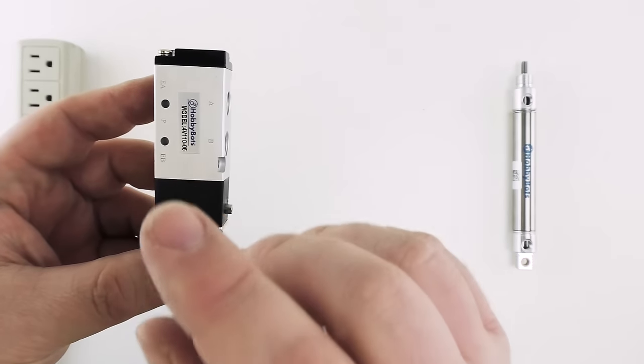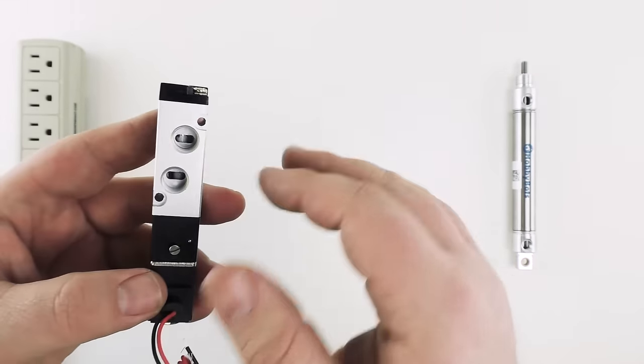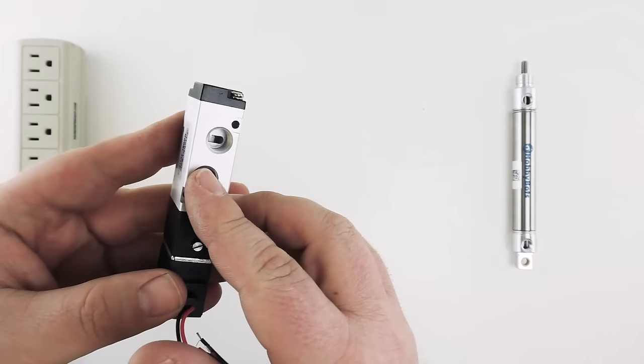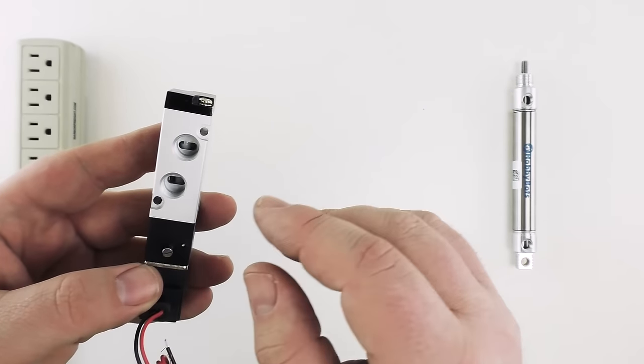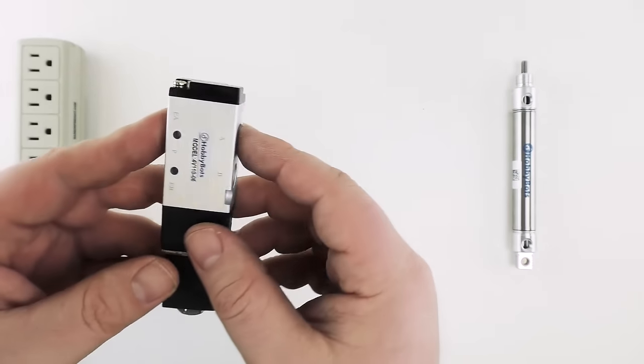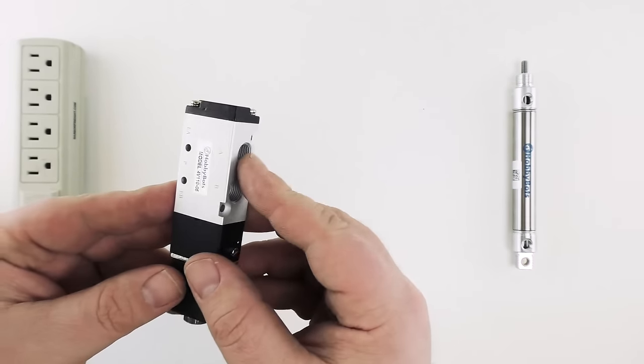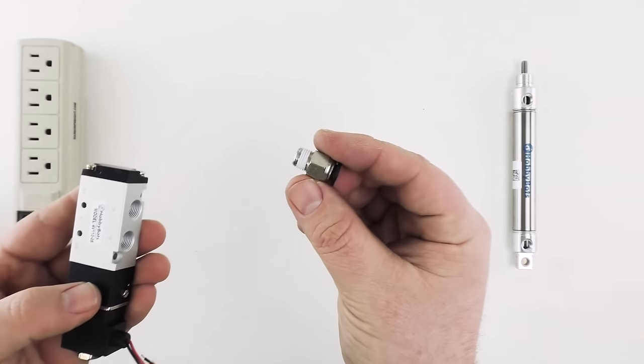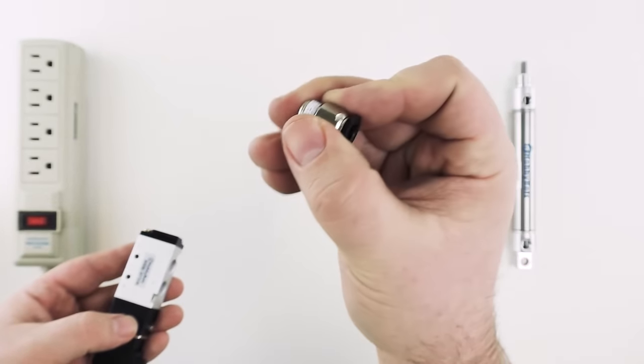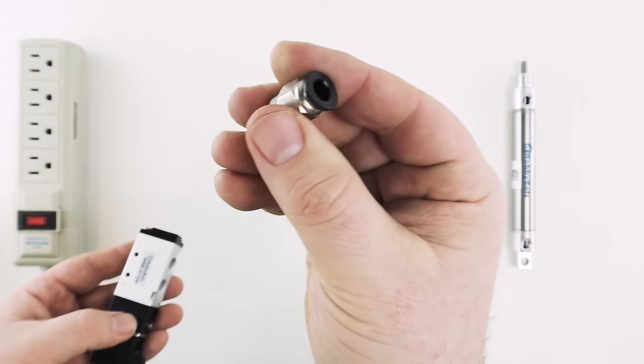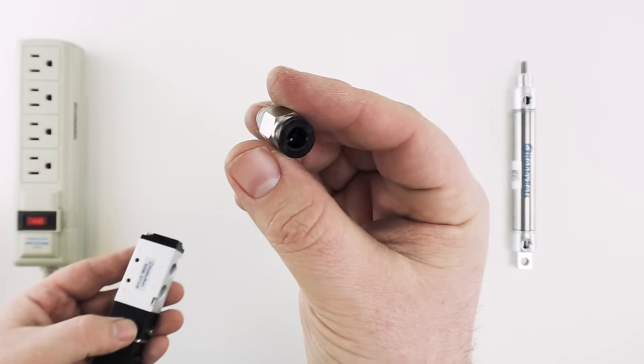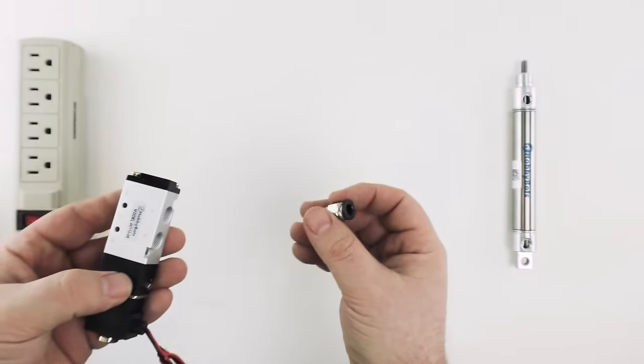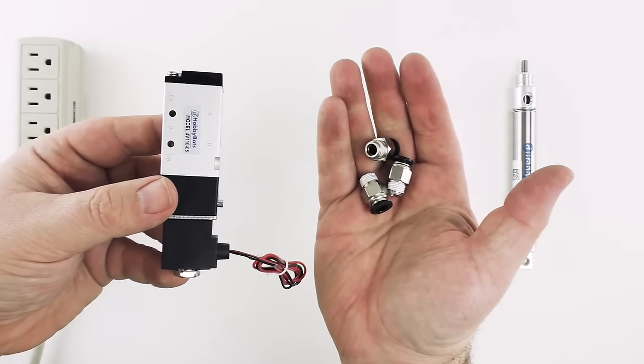So the first thing we're going to do is install fittings in our solenoid. Now solenoids come in a variety of sizes. This one is an eighth inch NPT solenoid. That means that these female threaded holes are one eighth inch NPT. We have several fittings the correct size to match. You'll see that these fittings are threaded on one end and the other end has a plastic ring to accept a quarter inch outer diameter air line.